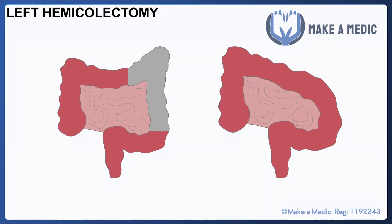A left hemicolectomy, on the other hand, is usually done for problems affecting the descending colon, such as a tumor. It involves removing everything from around two-thirds of the way along the transverse colon all the way down to the sigmoid area, and it can be joined together with a primary anastomosis.